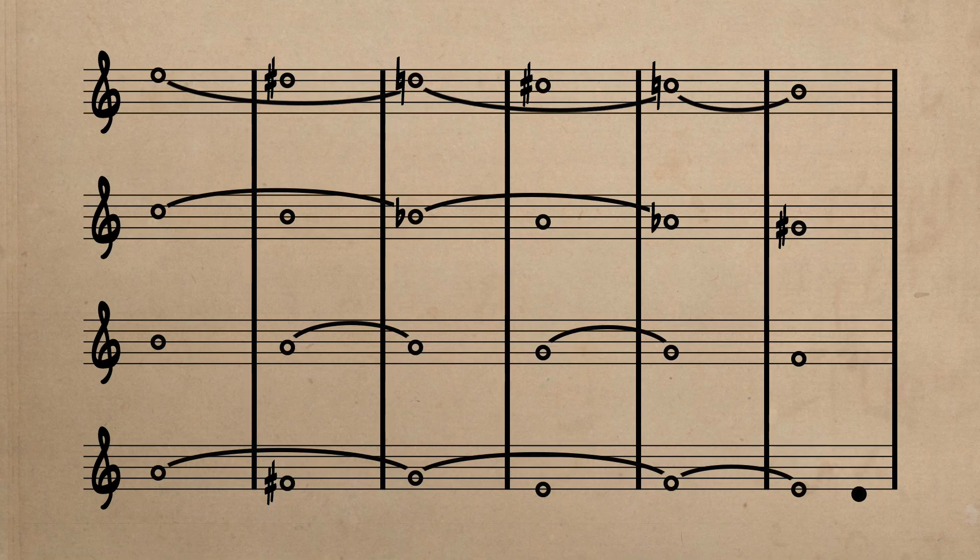Make note, however, that in measure five, the stepwise descent ceases due to oblique motion created by A-flat remaining unchanged, but enharmonically re-spelled as G-sharp.